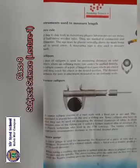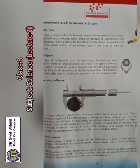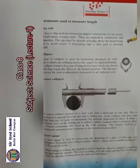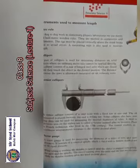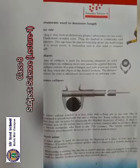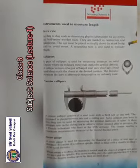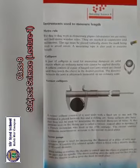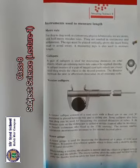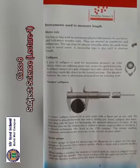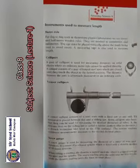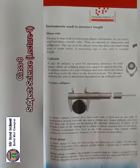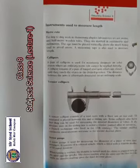The eye must be placed vertically above the mark being read to avoid errors. A measuring tape is also used to measure length when an ordinary meter rule cannot be applied directly.